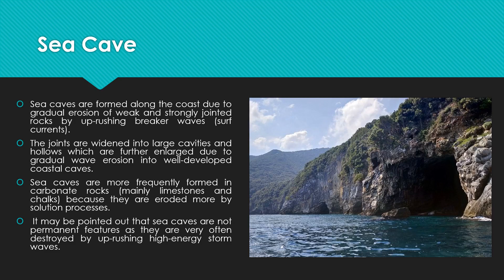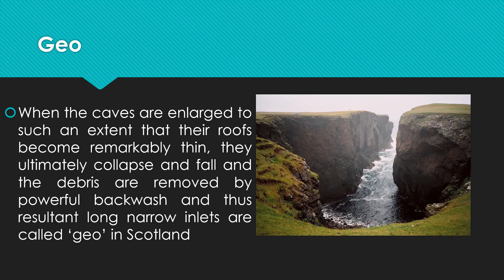CKs are most frequently formed in carbonate rocks because they are eroded more by the solution process. CKs are not permanent features as they are often destroyed by abrasion from high energy storm waves. The materials are removed by powerful backwash, and the resultant long narrow inlets are called Geo in Scotland.